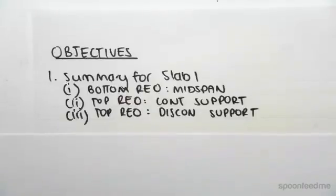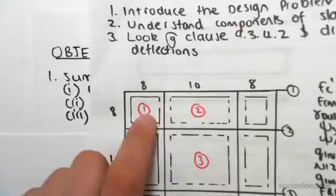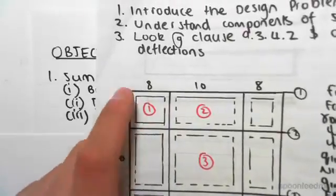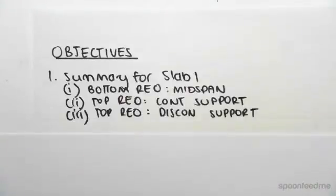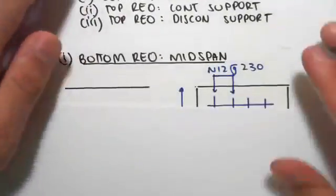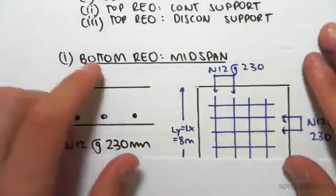Just to remind you of what slab one looks like, it's over here. We have the mid span values, we're going to have continuous edges and discontinuous edges.